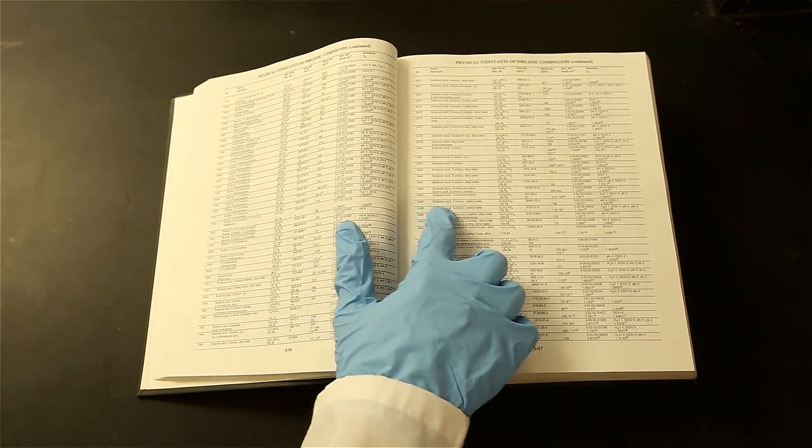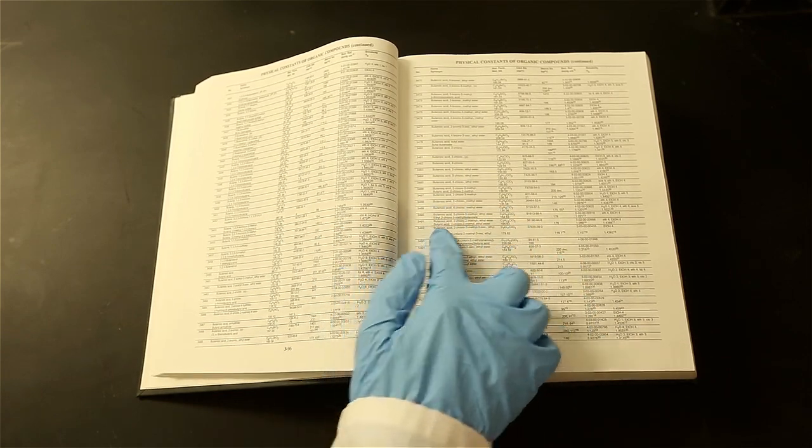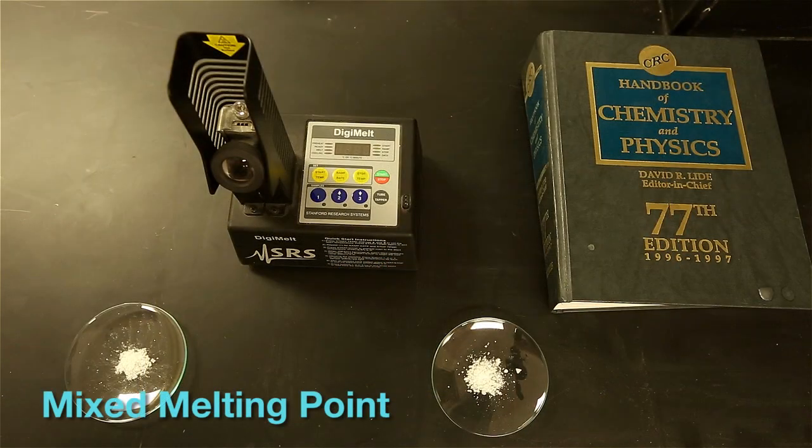Approximately 0.5 degrees depression corresponds to a 1% impurity. Now onto the topic of mixed melting points, which is a way to confirm your solid's identity.